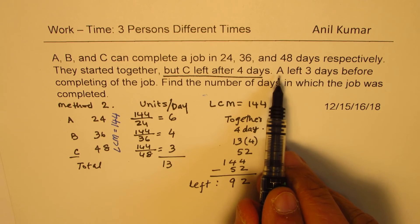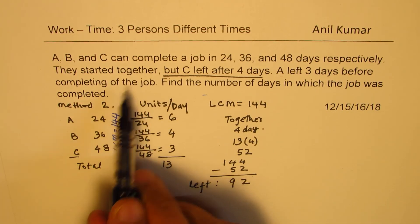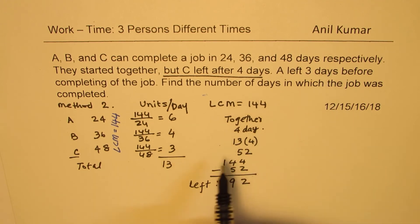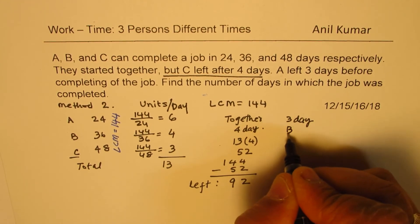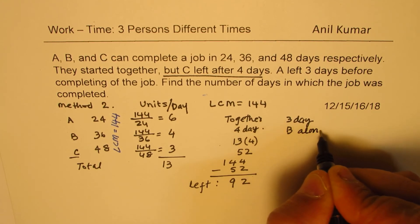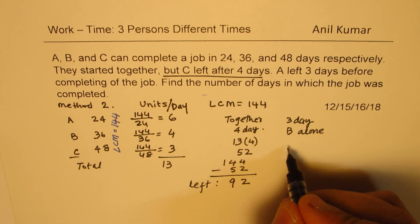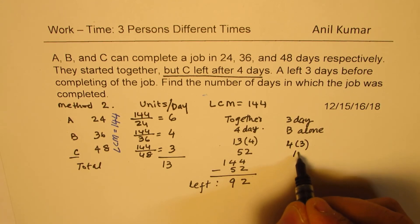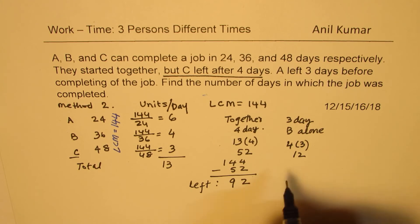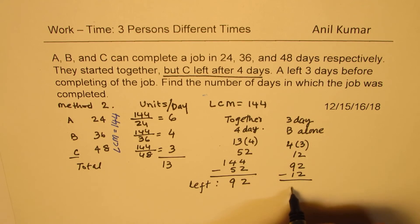Now, A left 3 days before completion of the job. That means, for 3 days, B worked alone. So B is contributing 4 units, 4 units for 3 days, that means 12. So now, from this left, 92, we'll take away the 12. What are we left with? 80 left.